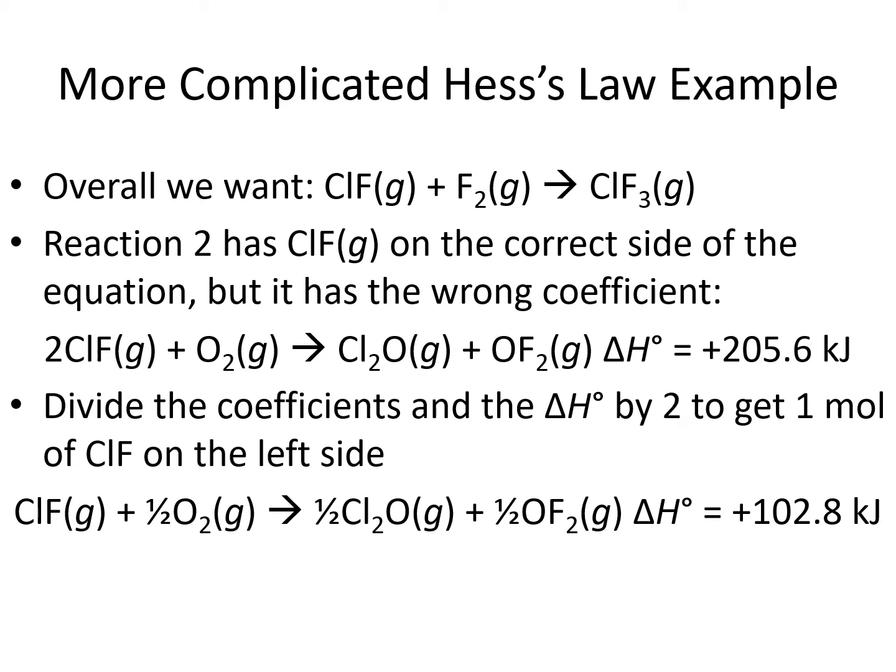We've gotten one compound the way that we want it in our overall equation — it's on the correct side and has the correct coefficient. Therefore, this is very likely to be the form of reaction 2 that we want to keep. When we add our delta H's in the end, we will use the manipulated value, positive 102.8 kilojoules.